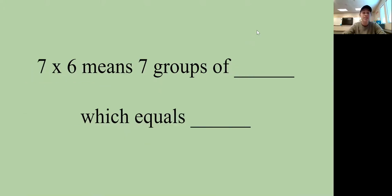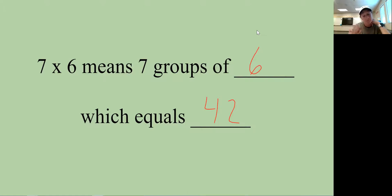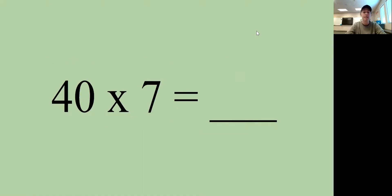Seven times six means seven groups of six, which equals 42. You can memorize that or draw seven circles with six dots and count them all up — though I think it's easier to memorize it because I don't want to count 42 dots.